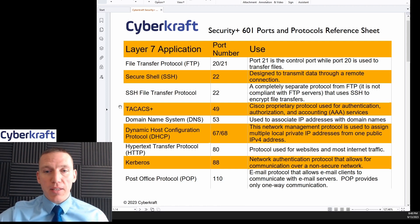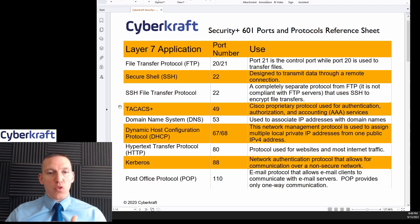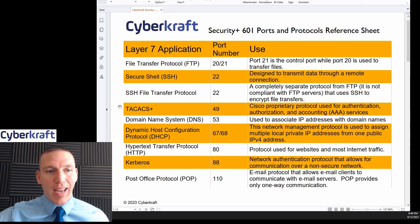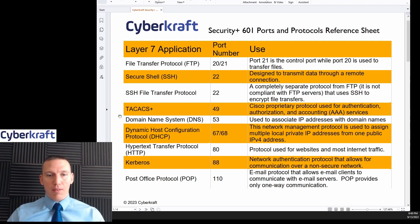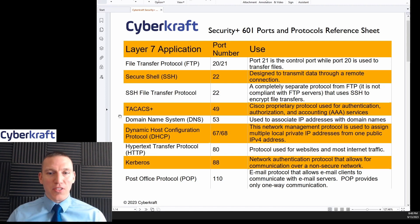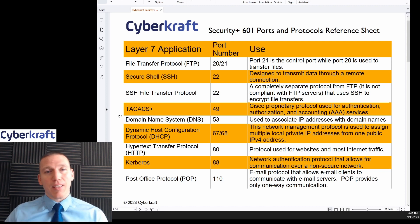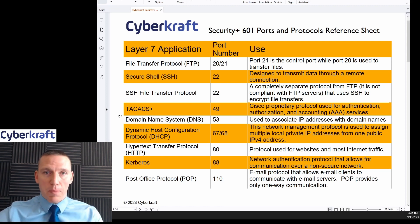TACACS+ is a Cisco proprietary protocol used much like RADIUS for AAA servers — authentication, authorization, and accounting — at port 49. We also have DNS, the domain name system. This is basically the phone book of the internet, allowing it to work by resolving IP addresses with domain names. You type in a domain name like cybercrafttraining.com and DNS navigates you to the proper IP address without typing specific IP addresses.